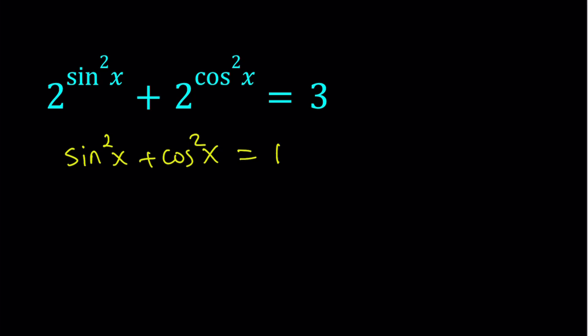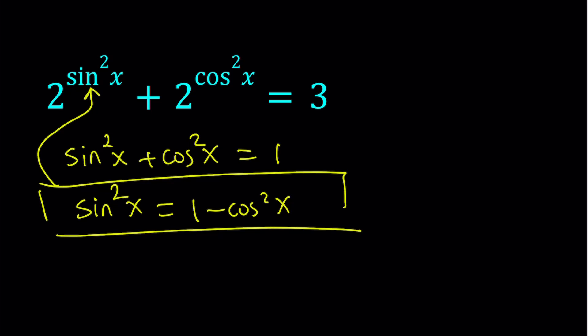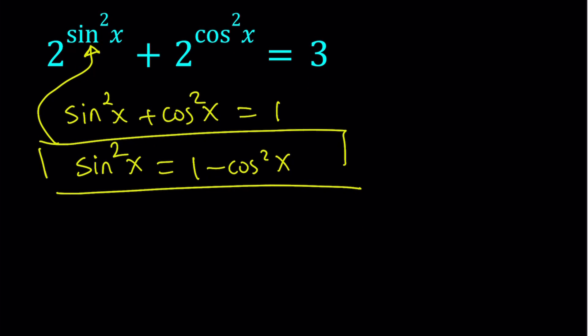Awesome. So from here, I can go ahead and isolate sine squared. And sine squared can be written as 1 minus cosine squared. So this is what I would like to use. I'm going to substitute this into my equation. And that is going to simplify the equation.